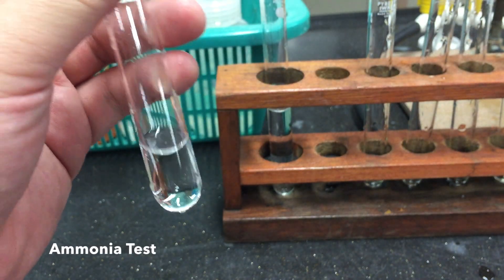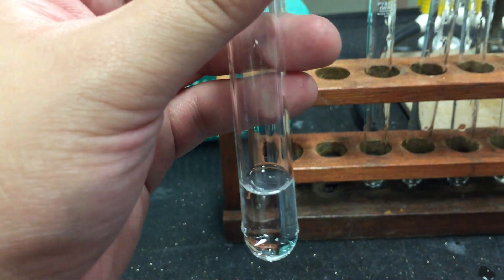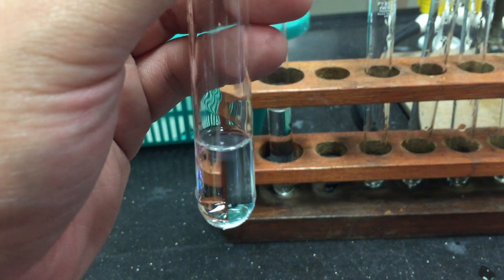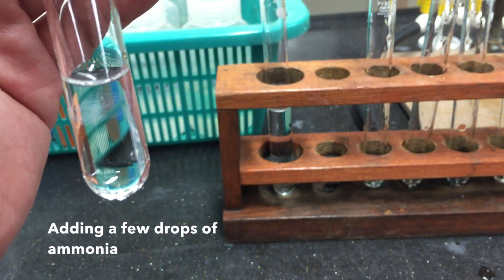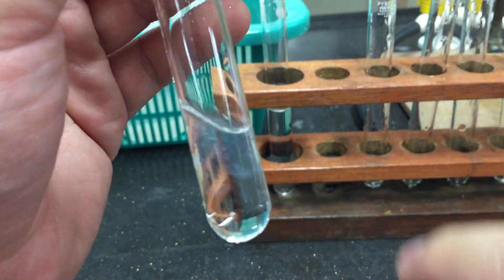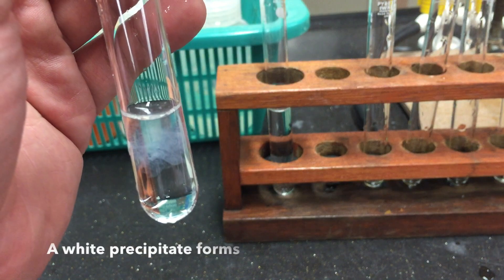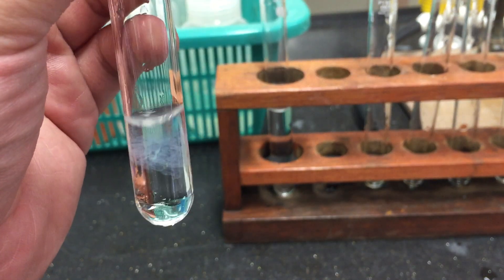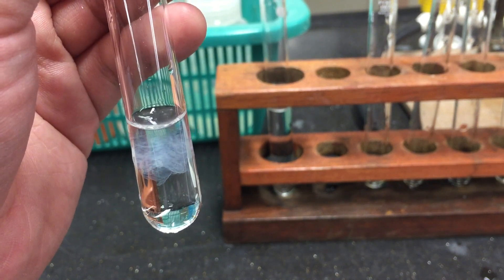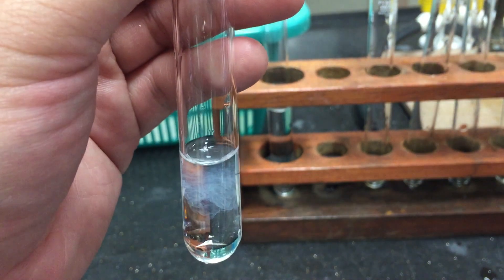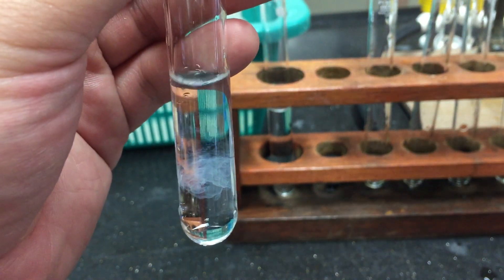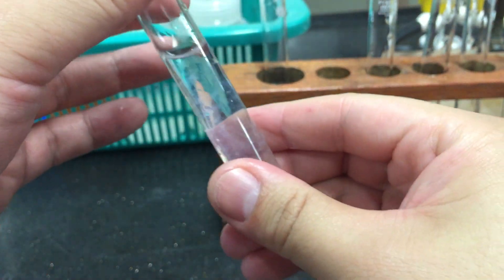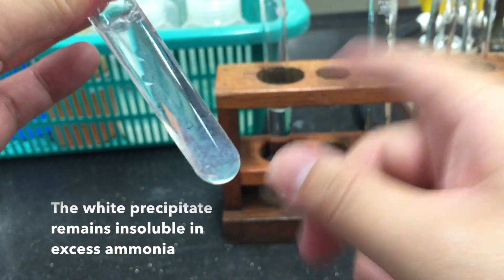We may also use the ammonia test. To a small sample of the solution, add a few drops of ammonia solution. Notice how a white precipitate forms. Proceed to add an excess of ammonia solution. Notice how the white precipitate remains insoluble in excess ammonia.